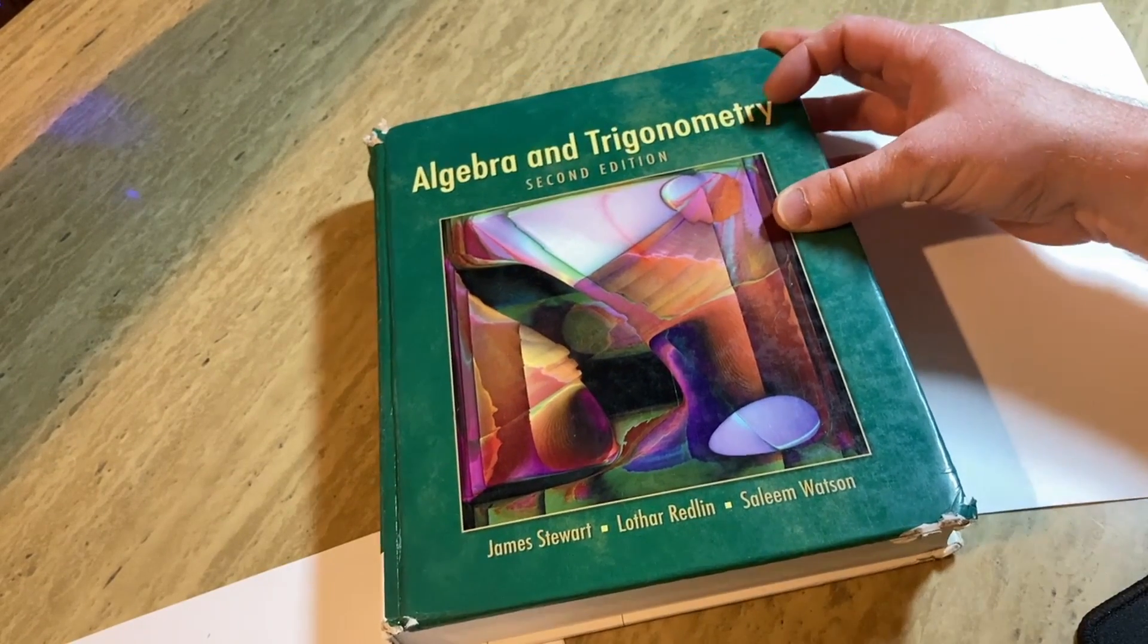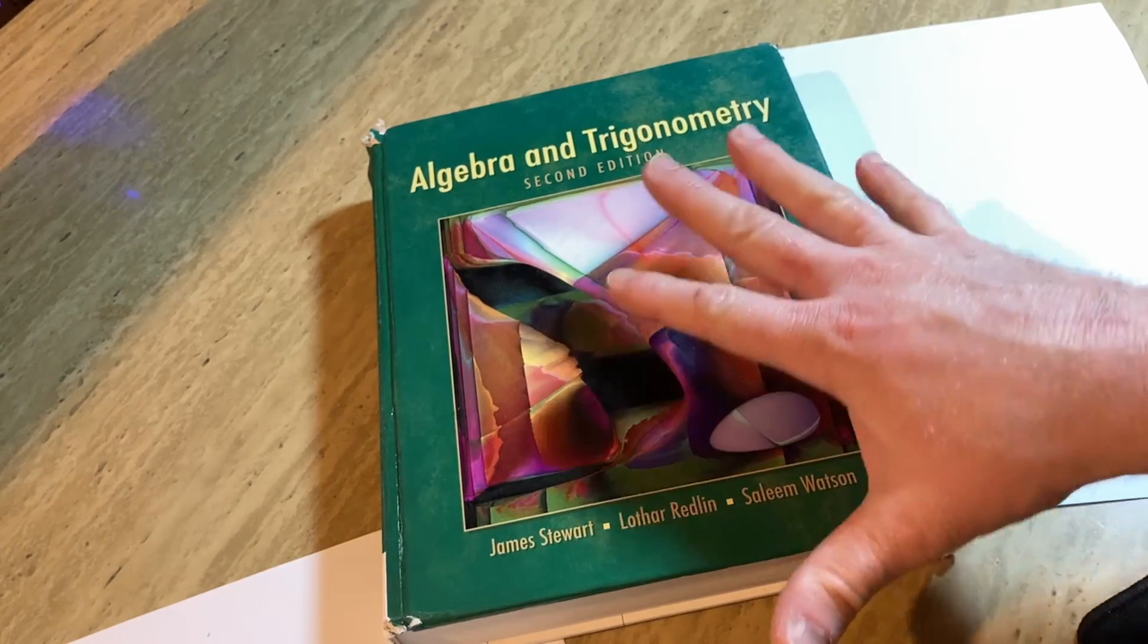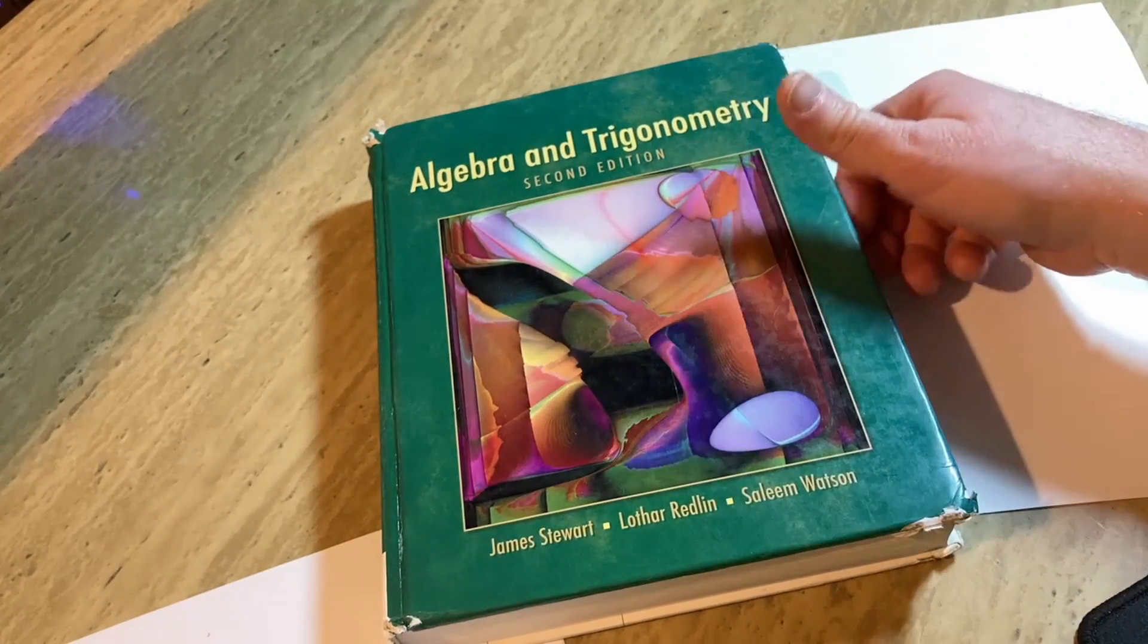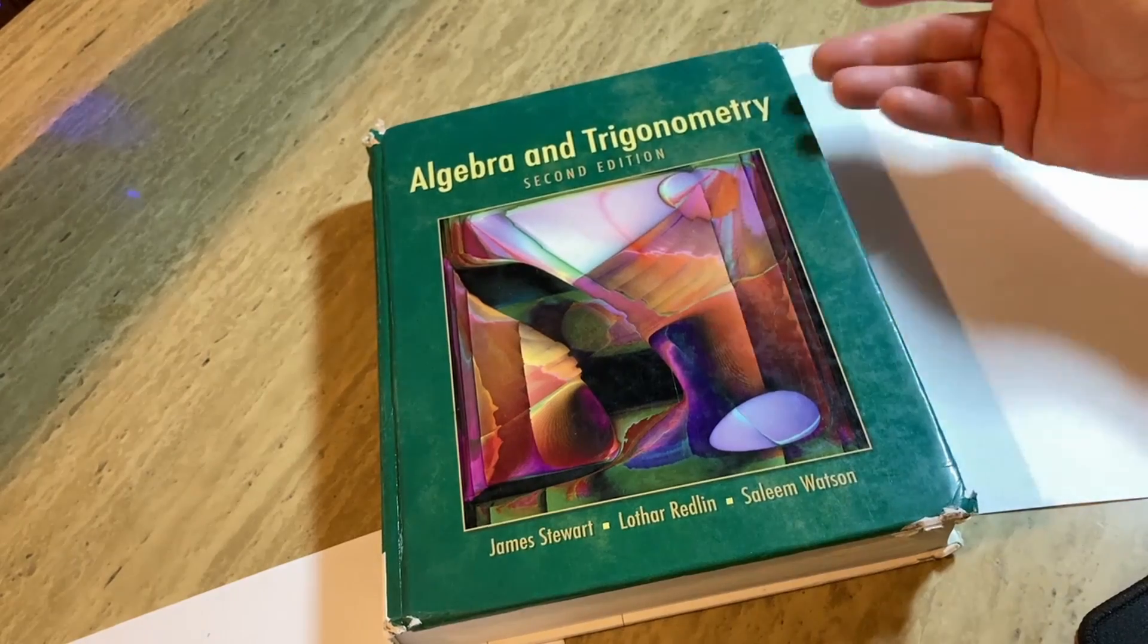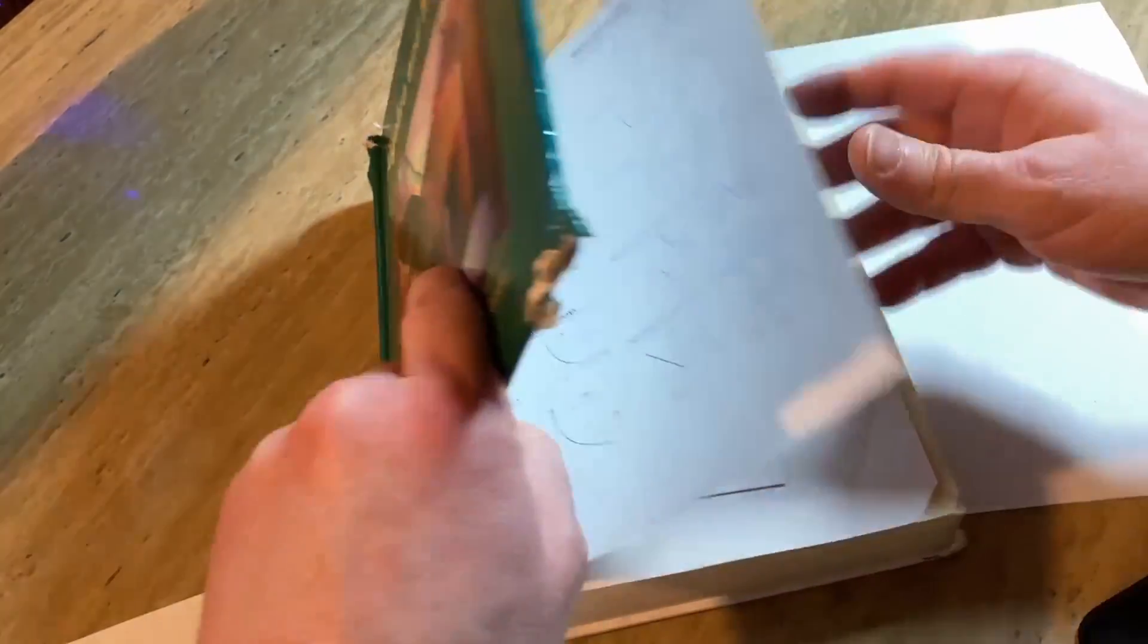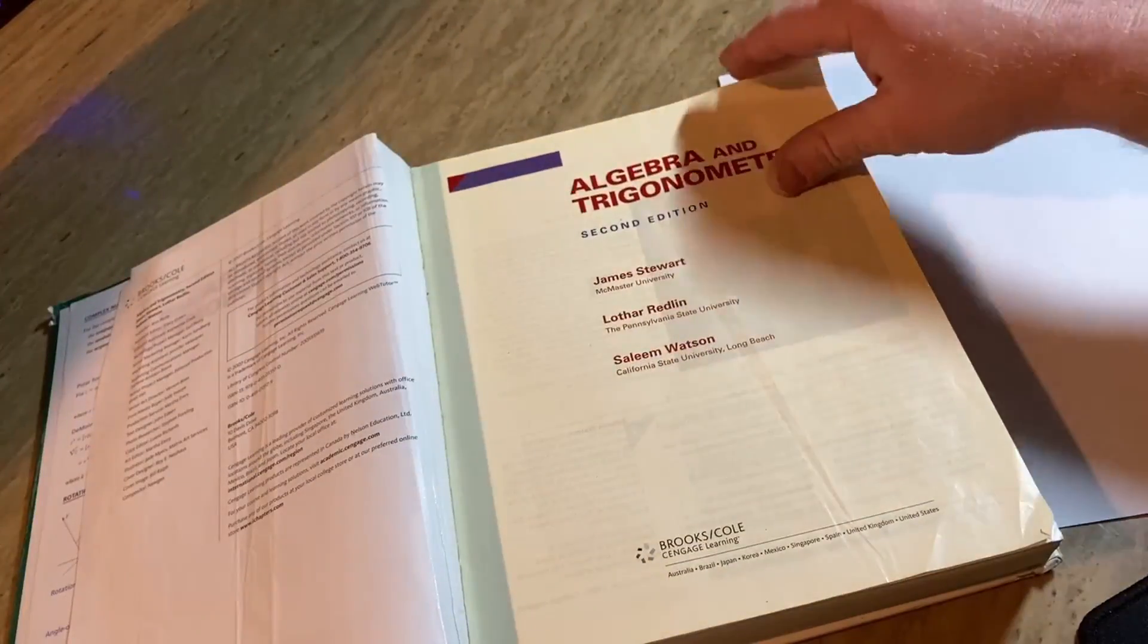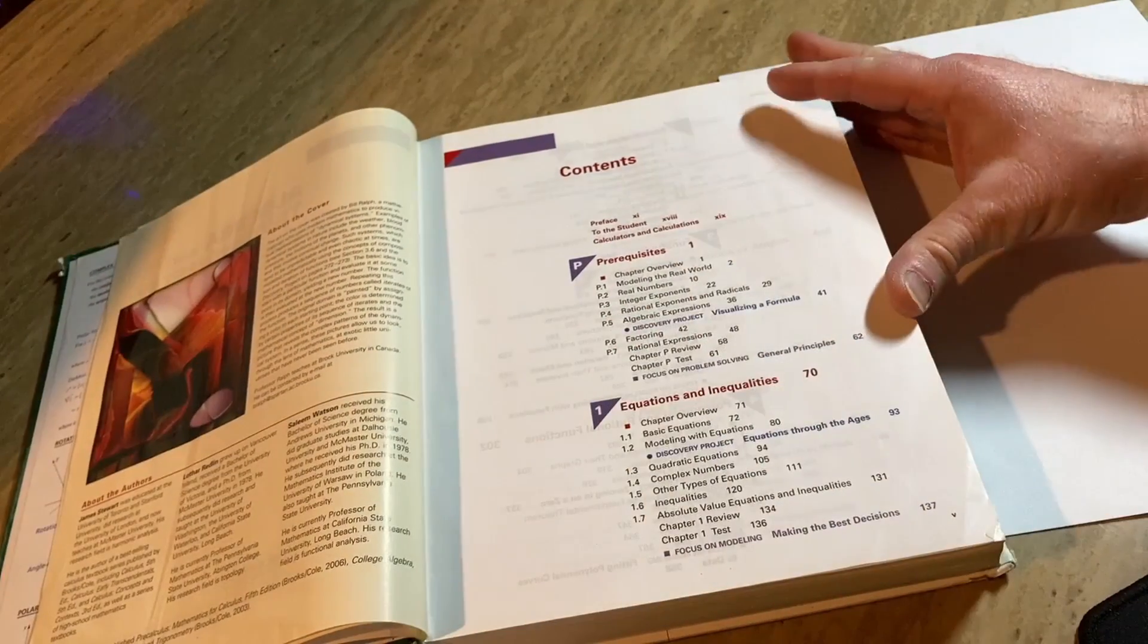So this book is called Algebra and Trigonometry. And this book is used in the US for courses such as pre-calculus or courses such as trigonometry. And I suppose it could also be used for a course such as algebra. But most of the time it's like a pre-calc course or a trig course.